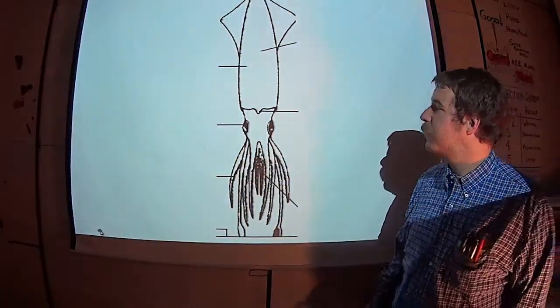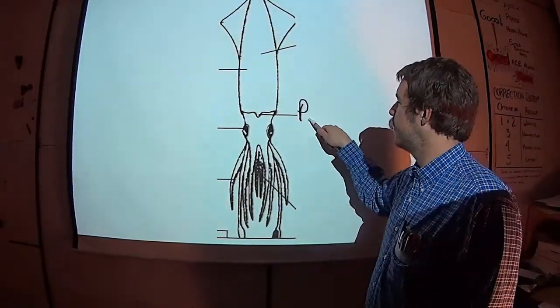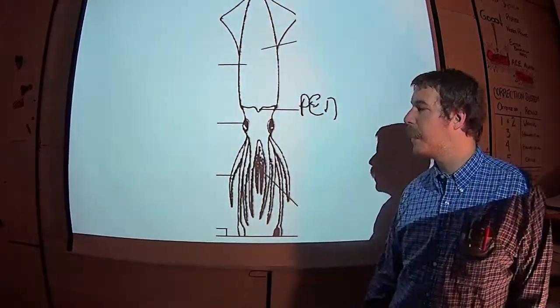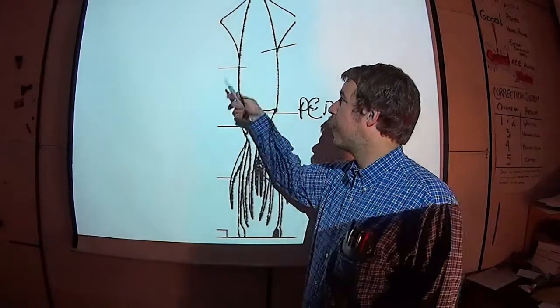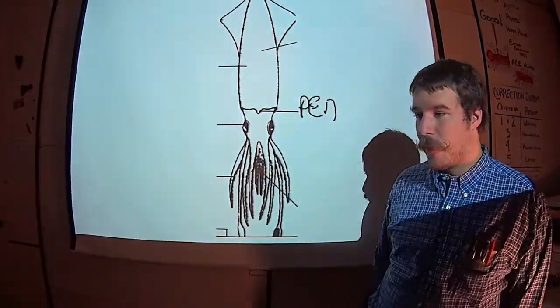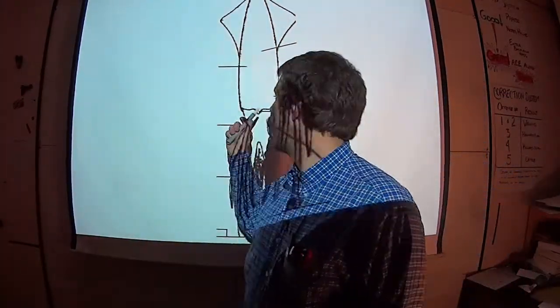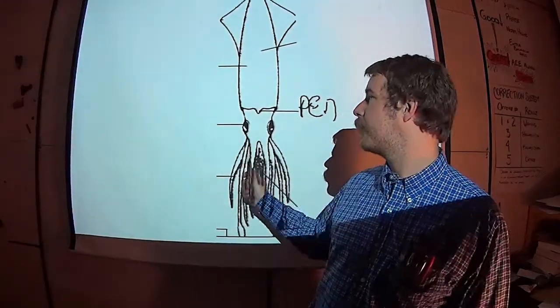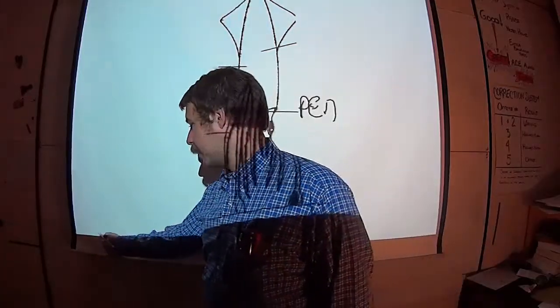Here's a picture of the squid. This is dorsal side up. You'll see right here this is actually the pen which is a nice supportive like backbone type structure and you should be able to see the eyes and the mantle and whatnot on the outside. This is not the side that you're gonna cut. If you have the pen side you need to flip it over. The pen's nice and hard and that should be on the bottom when you're dissecting.